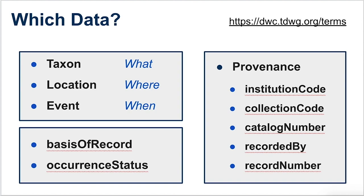Among all these primary biodiversity occurrence data, we can narrow it down to three categories: what, where, and when. The 'what' is the taxon — species or subsets of species. 'Where' is location, and 'when' is event. These three terms — Taxon, Location, and Event — are capitalized on purpose because they are what are called classes in Darwin Core, meaning they are a concept to which a set of fields might be attributed.